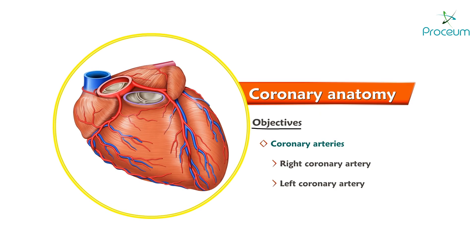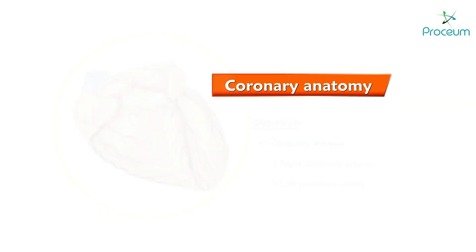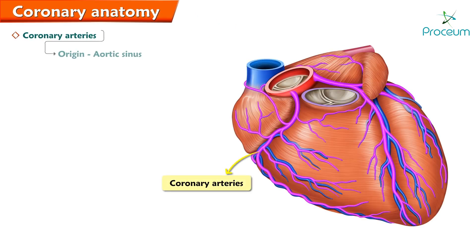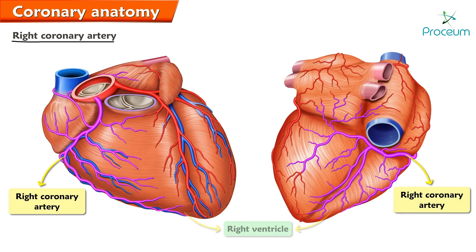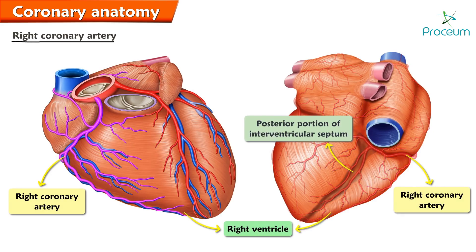Welcome to a series of lectures on cardiac anatomy, physiology, and pathology. In this section we'll discuss coronary anatomy. The coronary arteries originate from the aortic sinus, the region of the aorta just above the aortic valve. The right coronary artery supplies the right ventricle as well as the posterior portion of the interventricular septum.